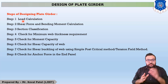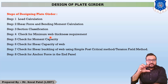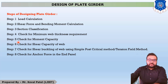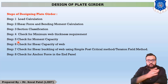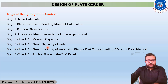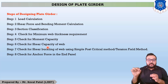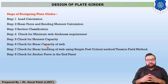From step number four to step number eight, all the checks are required to determine if your selected section is safe or unsafe. Step number four is check for minimum width-to-thickness ratio, given in IS 800-2007. Step number five is check for moment capacity, given on page number 53. Step number six is check for shear capacity of the web, with the equation Vd = Av × fy / (√3 × γm0), given on page number 59 of IS 800-2007.